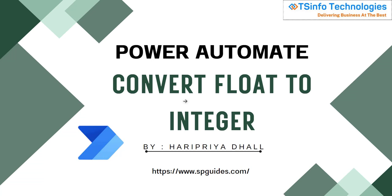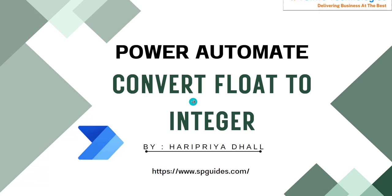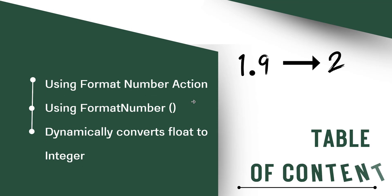Welcome to the YouTube channel. Today we will see how to convert float to integer using Power Automate. We will cover three methods: the first is the Format Number action, the second is the Format Number method, and the third is taking items from a SharePoint list and converting float to integer.